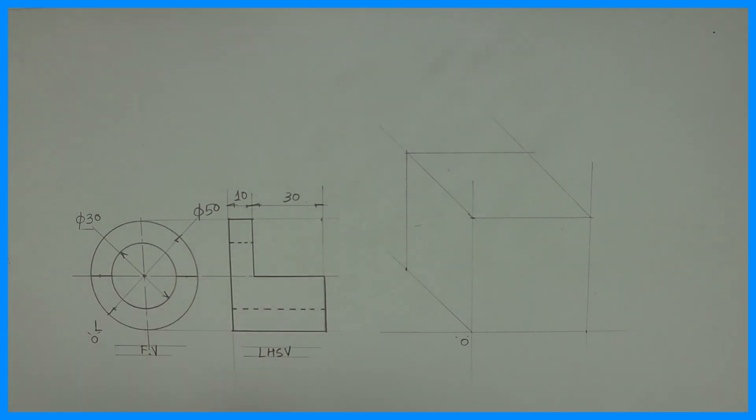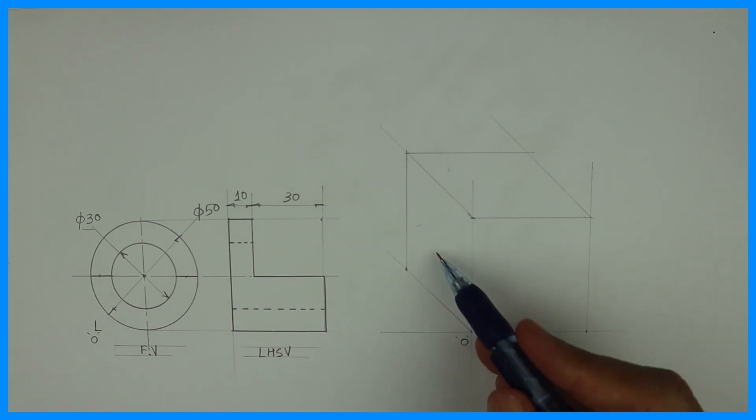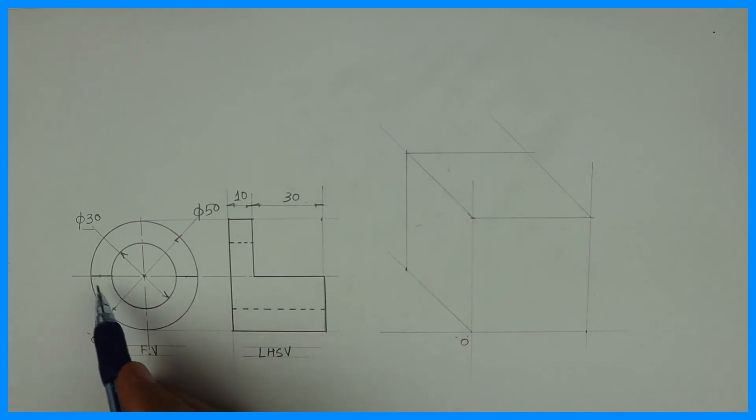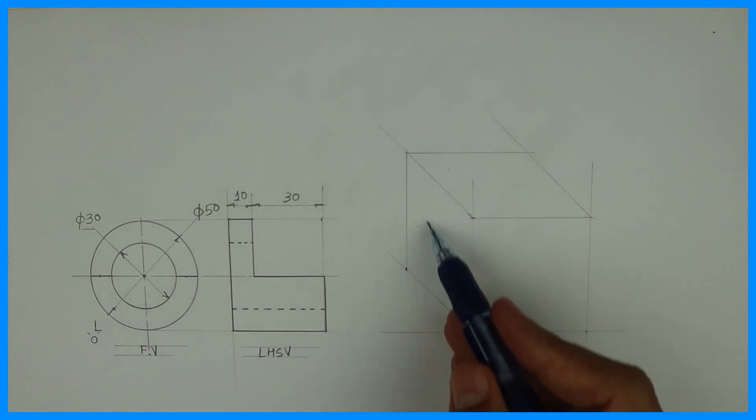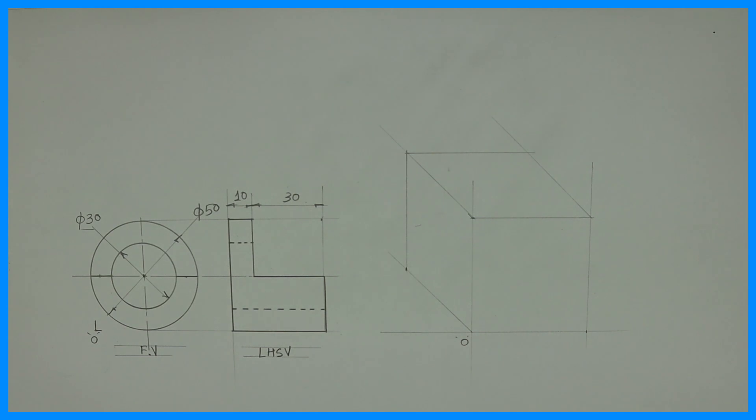This is front view where we will draw a circle. But if you see there is a dark line, that means there are two circles, two parts. And if you see side view, there is only one shape. See this L shape. So if you see the circle, it's divided into two parts. And side view is one part. So we'll start with side view.